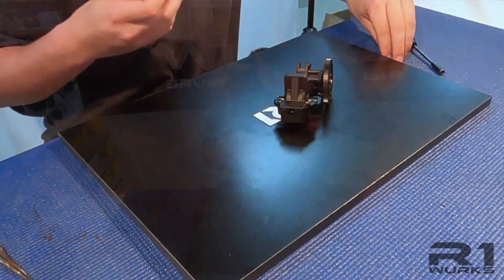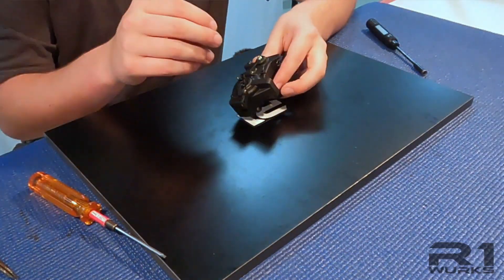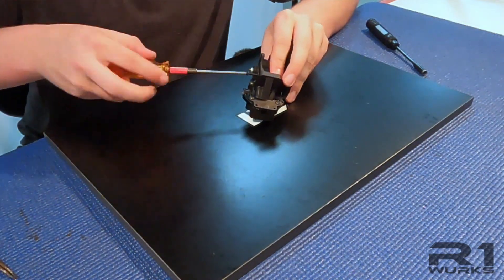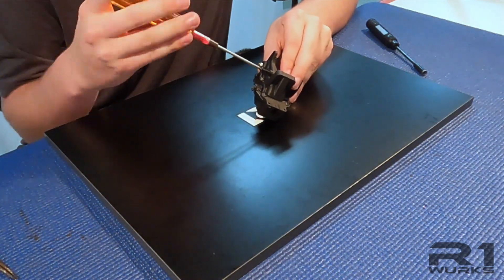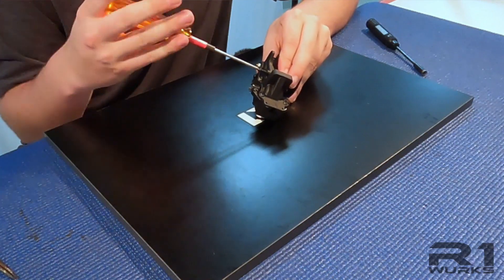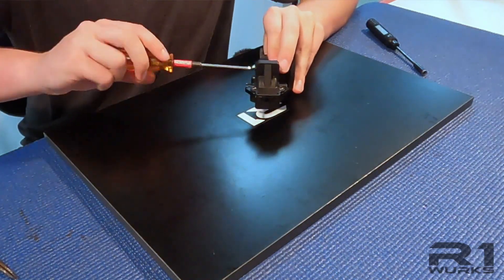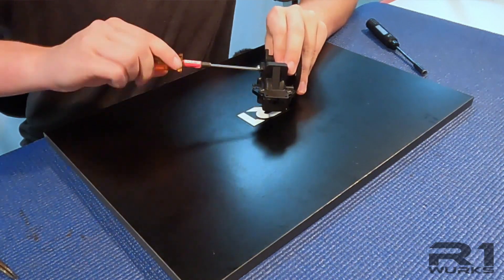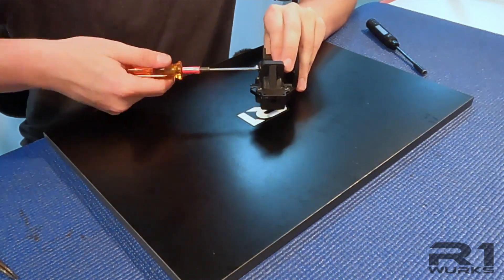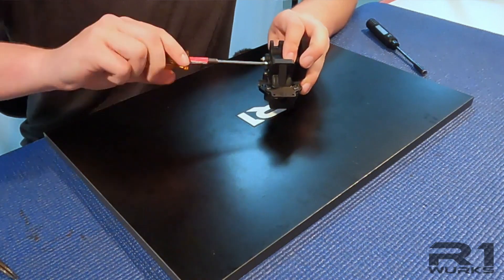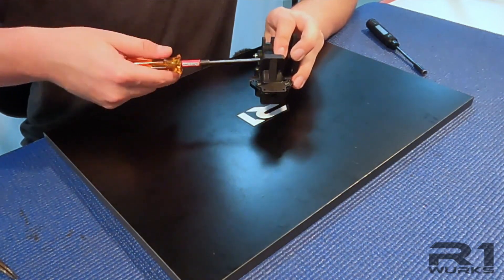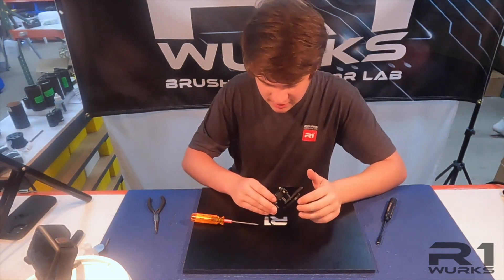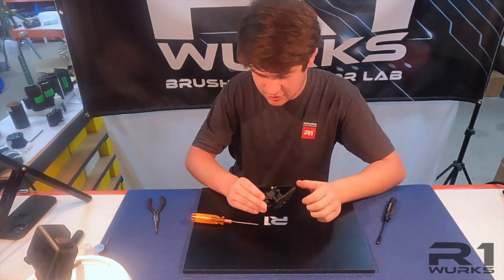Now that this is tight, everything's together and then to just secure this better, just one last screw. Just like the other case screws, we don't want to tighten these completely tight. Just get them snug. Make sure everything's spinning freely and your transmission's ready.